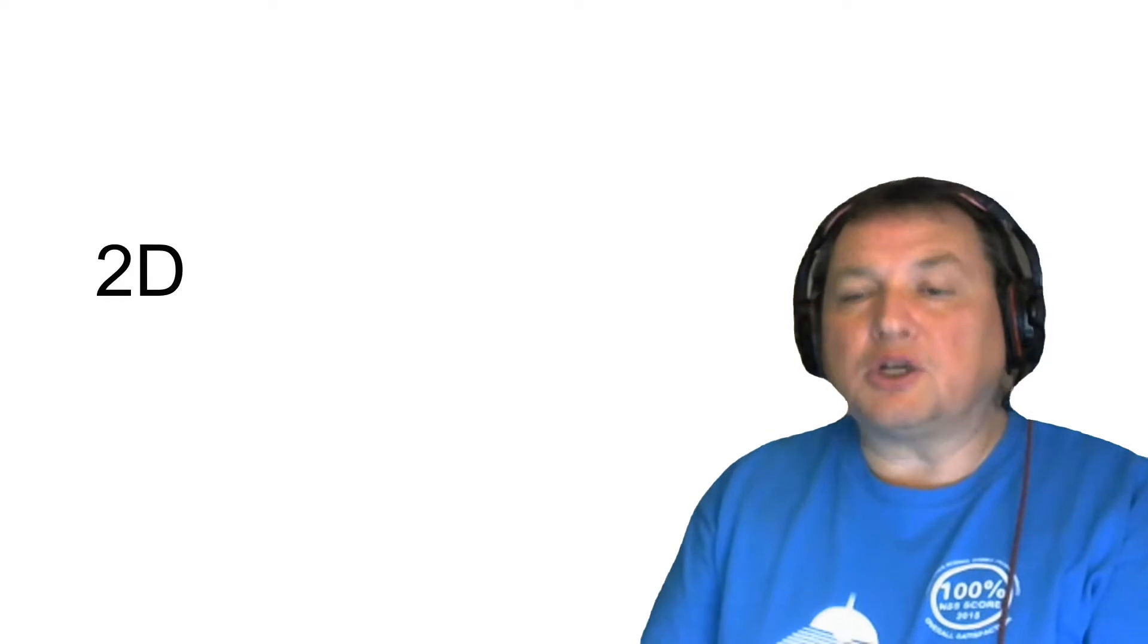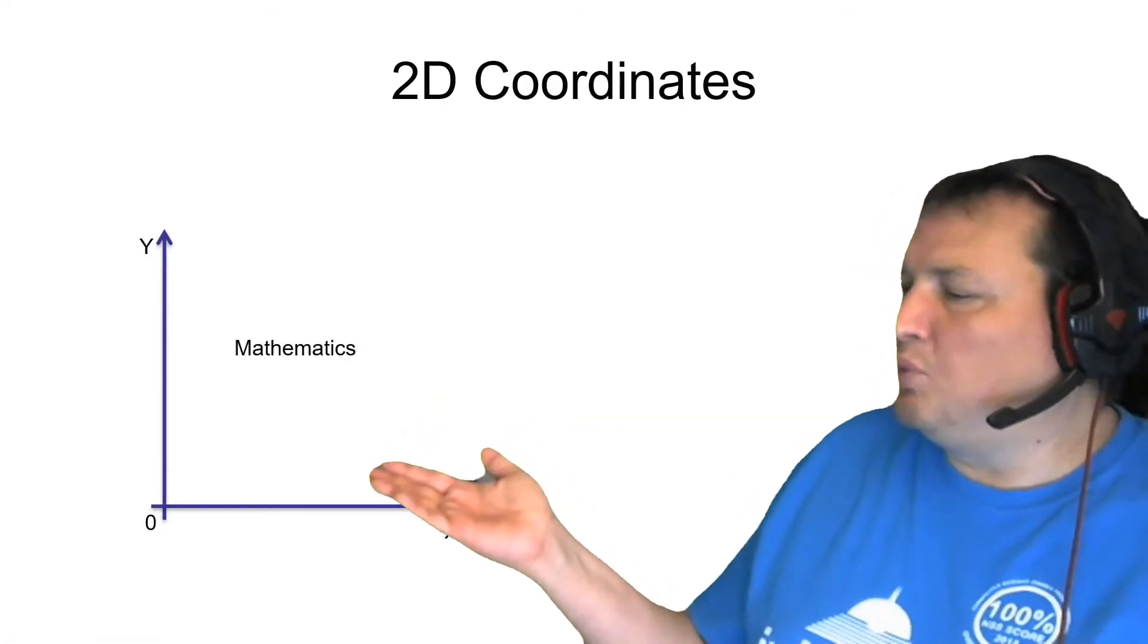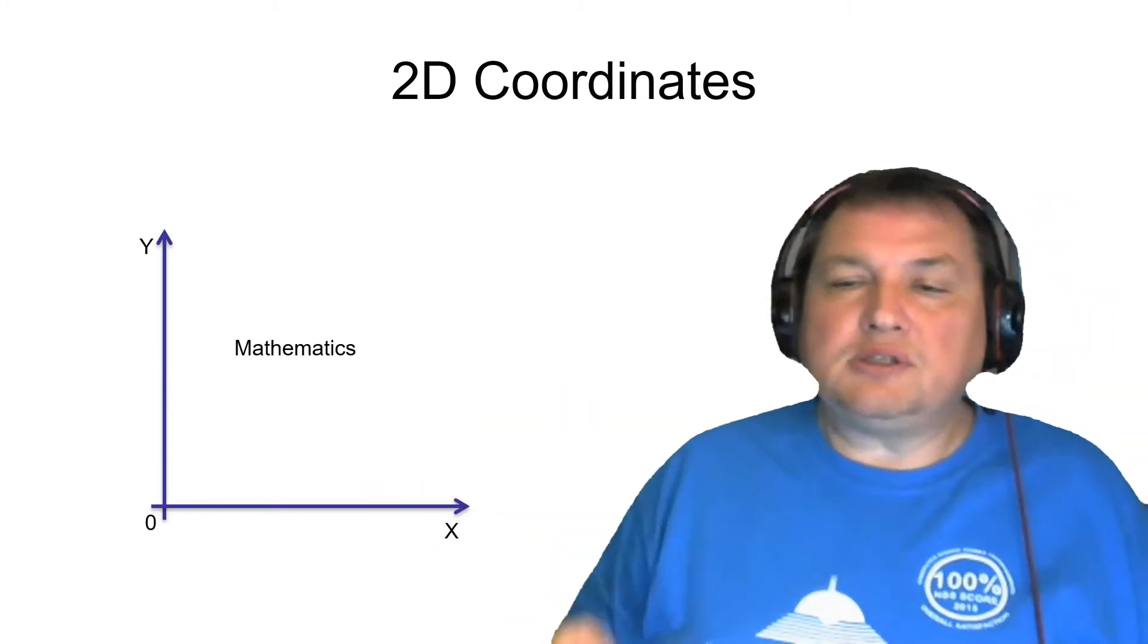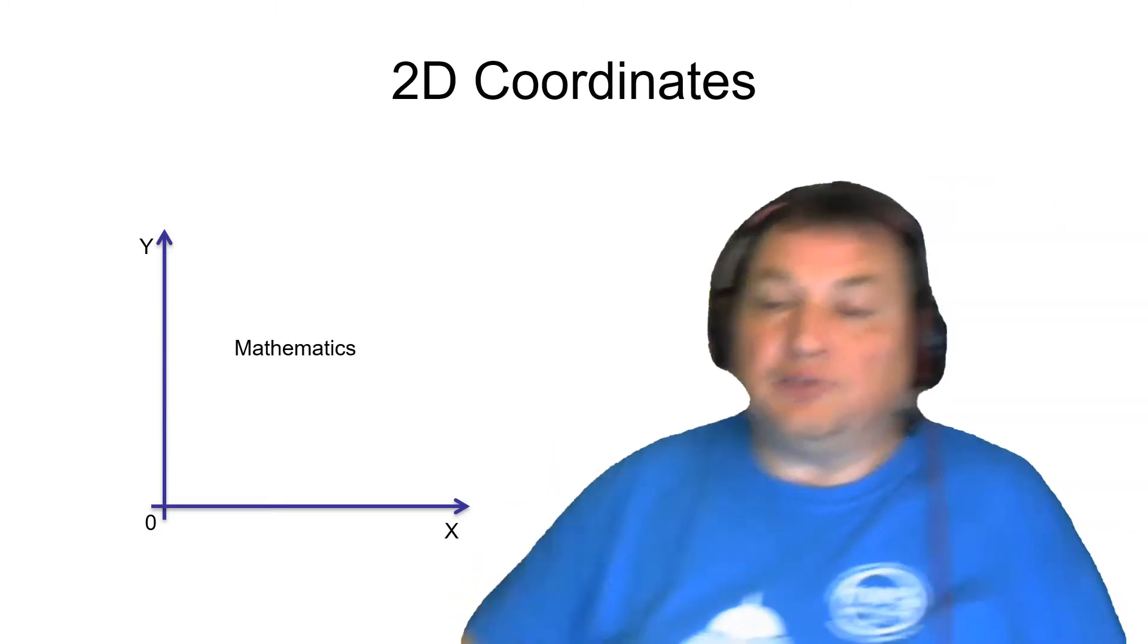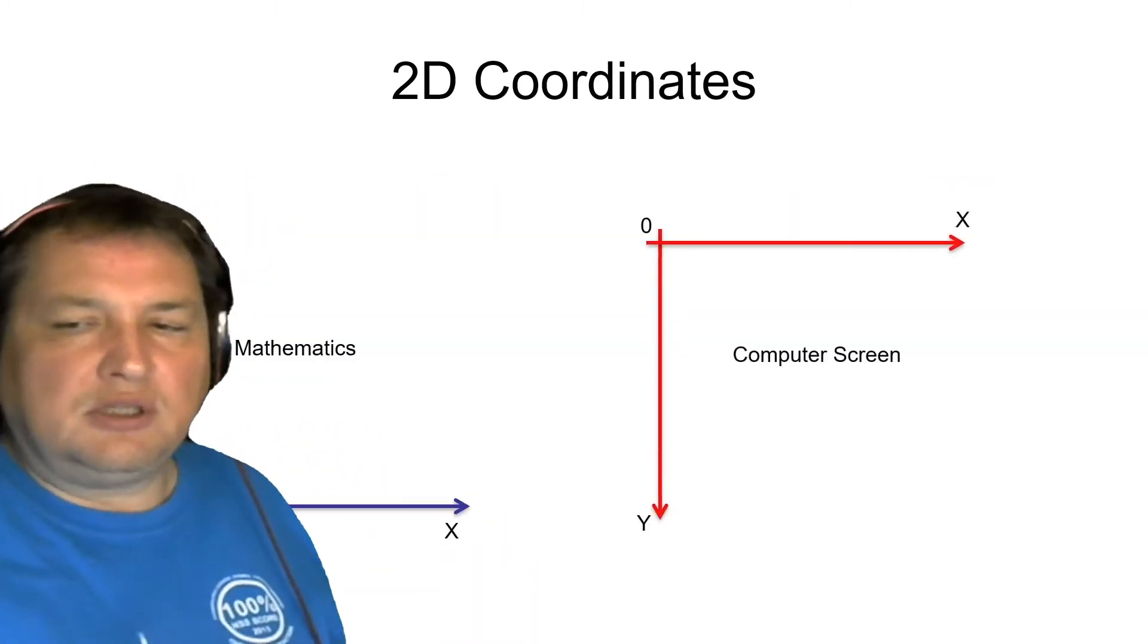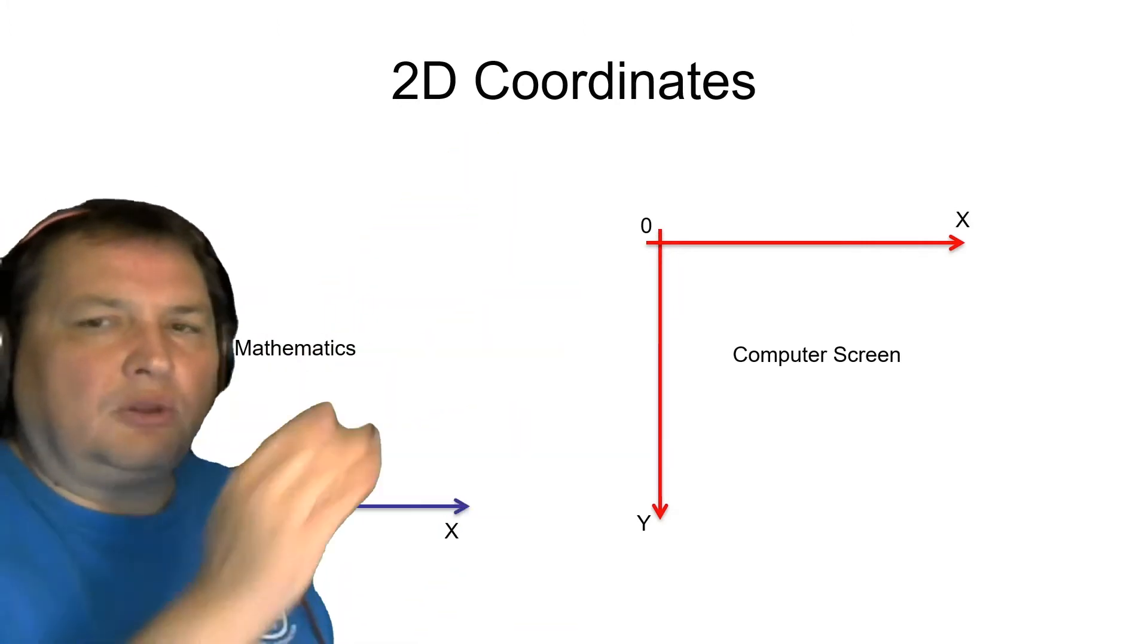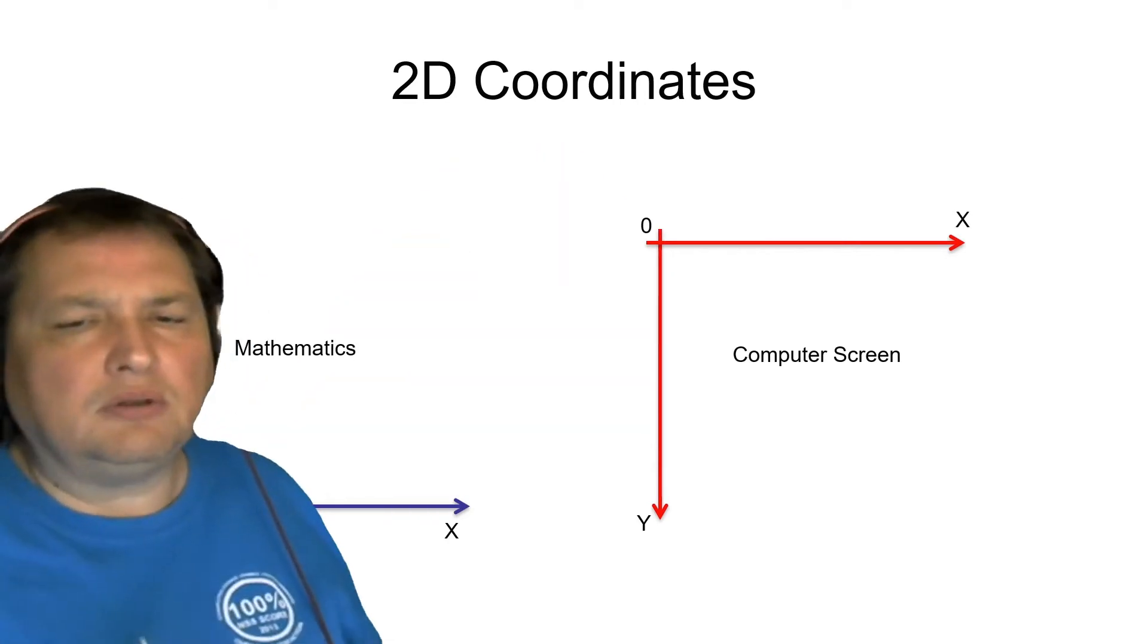Computer screens are naturally 2D. And speaking 2D, we have to consider a coordinate system like this one, well known since your primary school maths. But coordinate systems used in computer screens quite often are different. They are like this one. As you can see, the y-axis is upside down and the origin of the system is in the upper left corner.